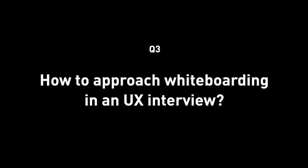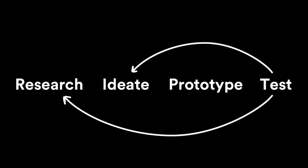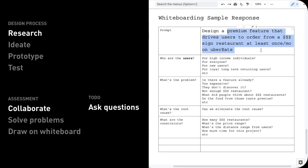Next, let's go into how to approach whiteboarding. One way I would do it is to use the design process framework — the one you're all familiar with: research, idea, prototype, test, production — and do it step by step. Let's use the DoorDash prompt as an example: design a premium feature that drives users to order from a three-dollar-sign restaurant at least once a month on Uber Eats. First, in the research phase, ask questions — ask a lot of questions — because the problem is so vague, broad, and ambiguous.